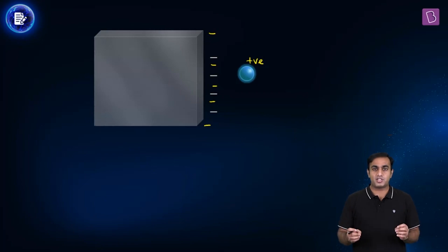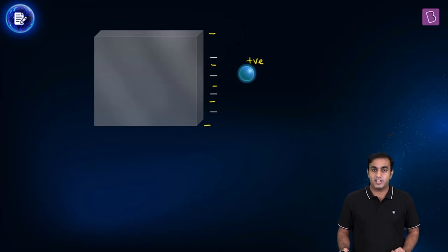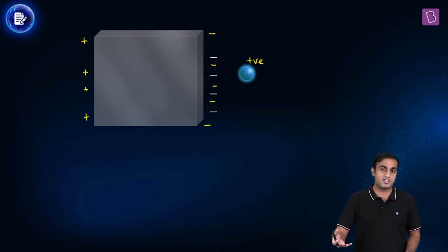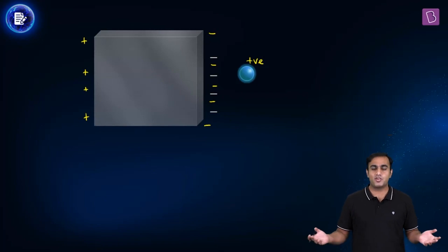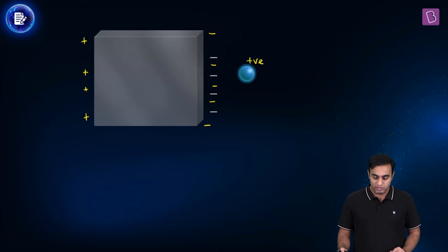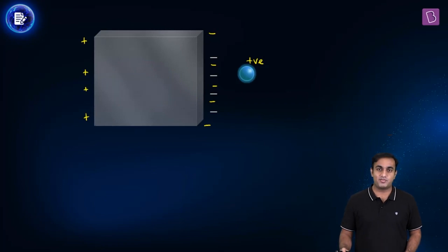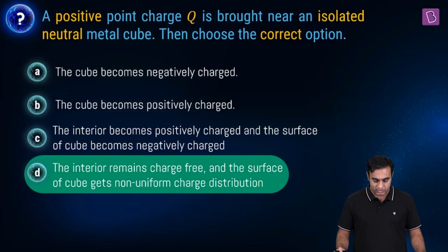The net charge on the conducting cube is zero in the beginning. In order to maintain this net charge being zero, there has to be an opposite type of charge induced on the other side — the farther side — and that has to be positive in nature. The distribution is non-uniform again, because with this kind of charge distribution the net electric field inside the material of the conducting cube will be zero. With all these points in mind, the correct statement has to be D.